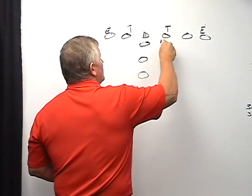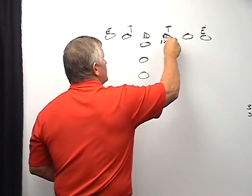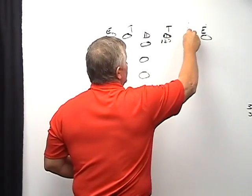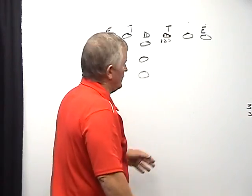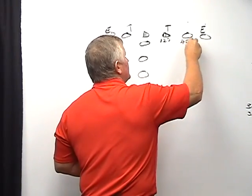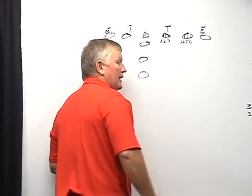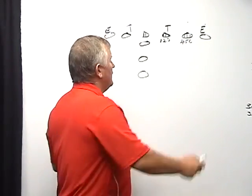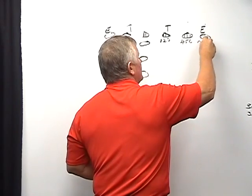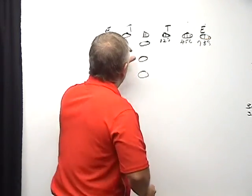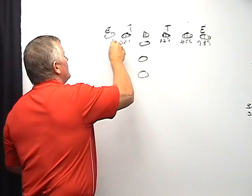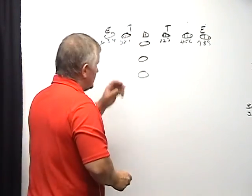The numbering system works like this: if a defender is inside, he's a one; head up is a two; outside is a three. That particular alignment is a three — he has no call because he's uncovered. If he's covered, we go four, five, six: inside, head up, outside. If he's got somebody on his head, he's covered. We then go seven, eight, nine: inside, head up, outside. On the backside, we go one, two, three, four, five, six. So in this particular defense...